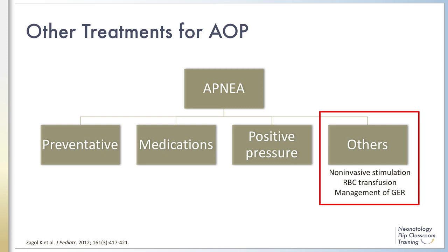In many units, reflux is treated because of a belief that reflux events can precipitate apnea. The proposed mechanism is laryngeal chemoreflux. Despite the frequent coexistence of apnea and reflux in preterm infants, no studies definitively identify a link between reflux and apnea, and pharmacotherapy of reflux does not prevent apnea of prematurity. It's important to note that recent data suggest harmful effects of medication to reduce gastric acidity, as it can be associated with an increased incidence of NEC, late-onset sepsis, and death.